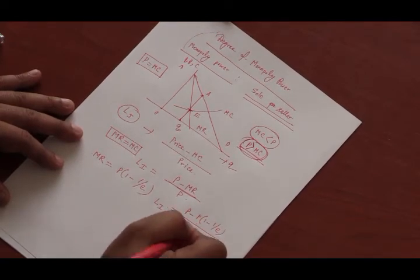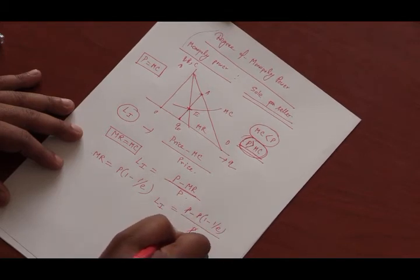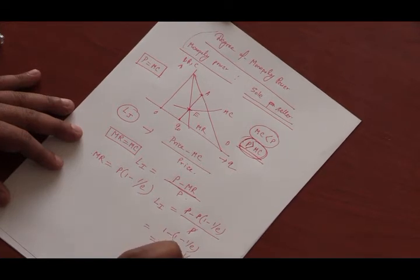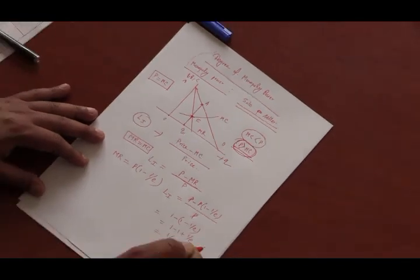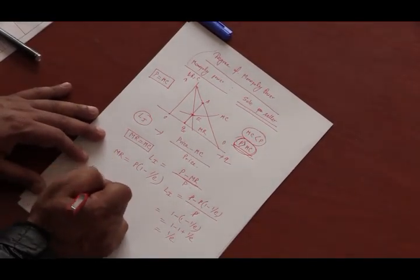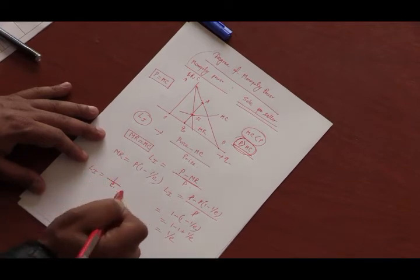So, if we simplify this, we will get 1 minus. So, it will become 1 minus 1 plus 1 by E. So, here we see that degree of monopoly power is inversely related to the price elasticity of demand.